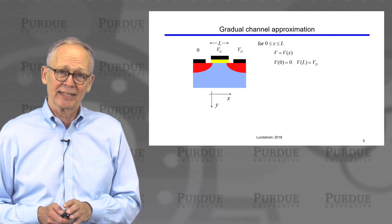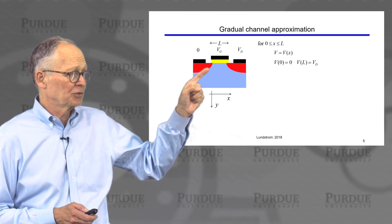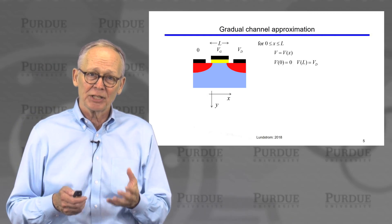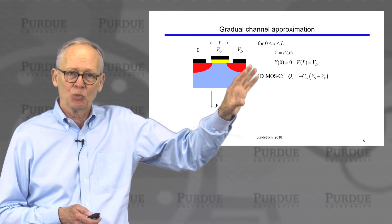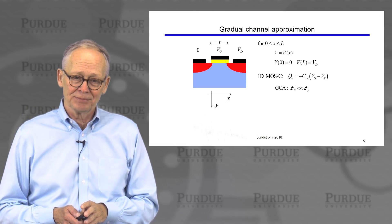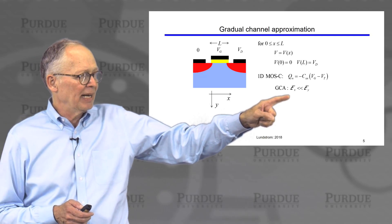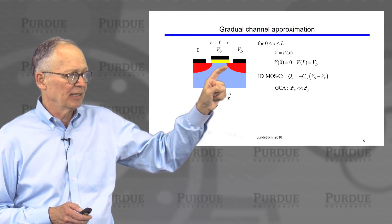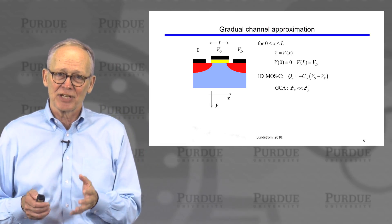Now we have a more complicated two-dimensional device. When we apply a drain-to-source voltage, we have electric fields not only in the normal (y) direction but also in the lateral direction. To make it tractable, we'll use the simple 1D MOS capacitor result and extend it appropriately using the gradual channel approximation. The idea behind this approximation is that the electric field normal to the channel is very large compared to the field along the channel — this tends to be valid in long-channel devices.